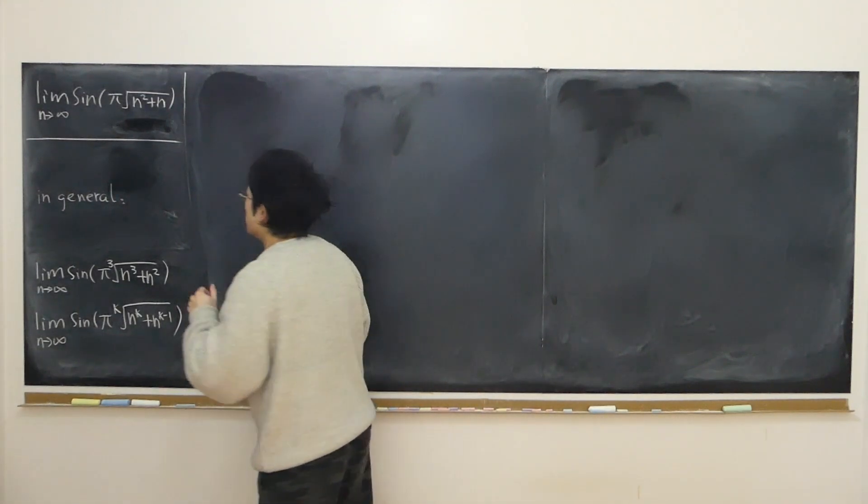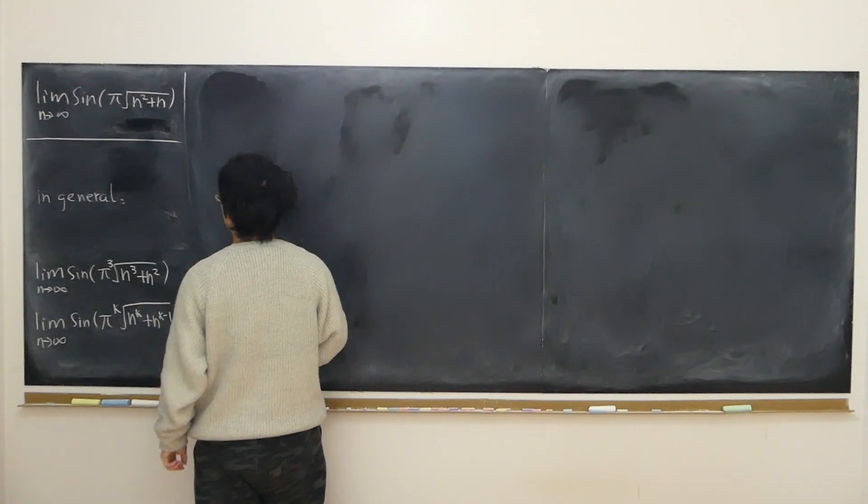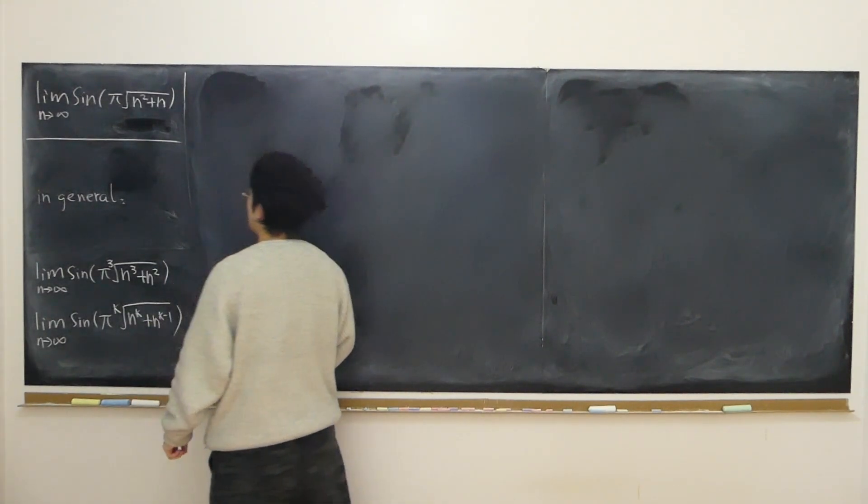I just came across this problem: the limit of sine of π times square root of n squared plus n as n approaches infinity.